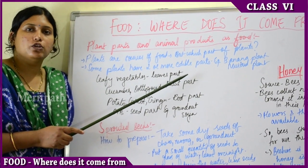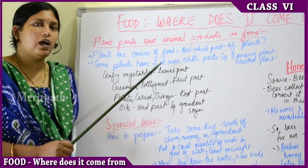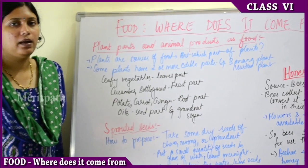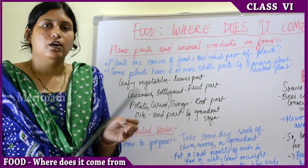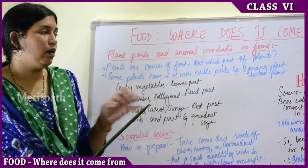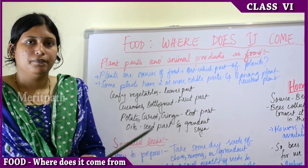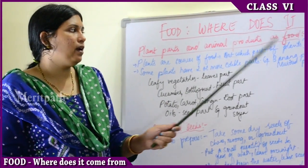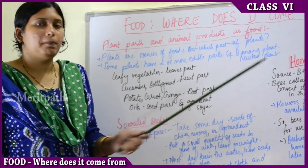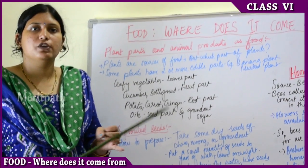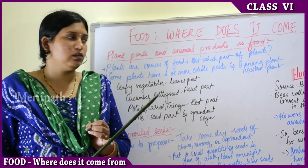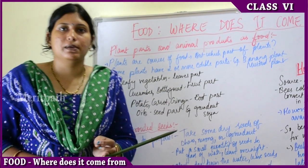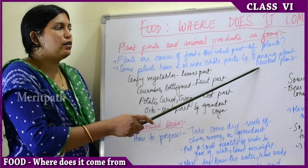Some plants have two or more edible parts. For example, the banana plant — we consume ripe banana as fruit, raw banana as vegetable curry, banana flower is used for cooking, and food is eaten on banana leaf. The mustard plant also gives us mustard seeds (called rai in Hindi), mustard flowers are used, and oil is extracted from it. These two plants are helpful in more than two or three ways.